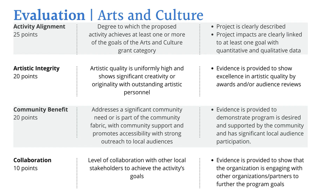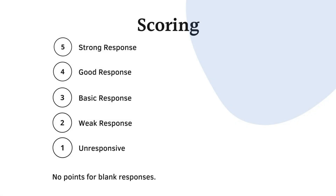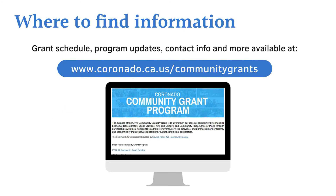Finally, under arts and culture, you'll notice that there are four evaluation categories. Specifically, let's look at artistic integrity with 20 points. Artistic quality is uniformly high and shows significant creativity or originality with outstanding artistic personnel. The expected response would be that evidence is provided to show excellence in artistic quality by the applying organization, which would include awards and/or audience reviews. Independent field readers will review all submitted material and score using a scale from a strong response to a weak response. The points awarded will be at their discretion based on the narrative submitted. Applications that do not respond to an evaluation category will receive no points.